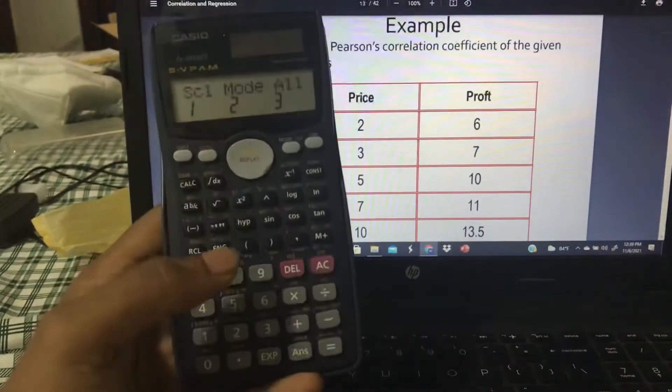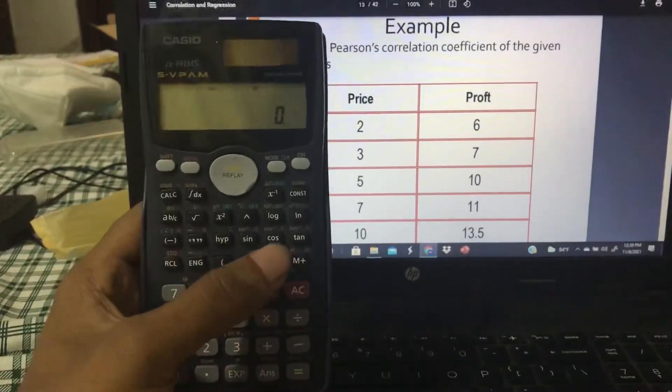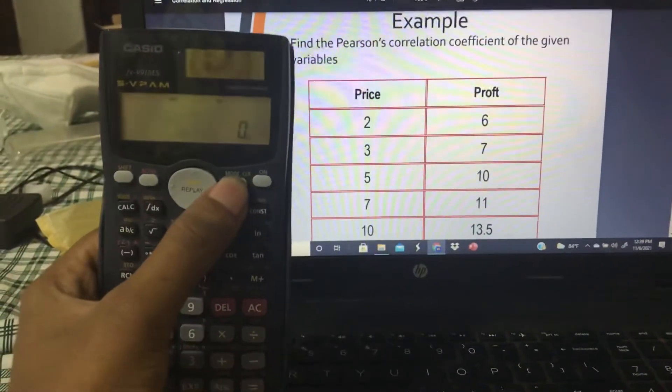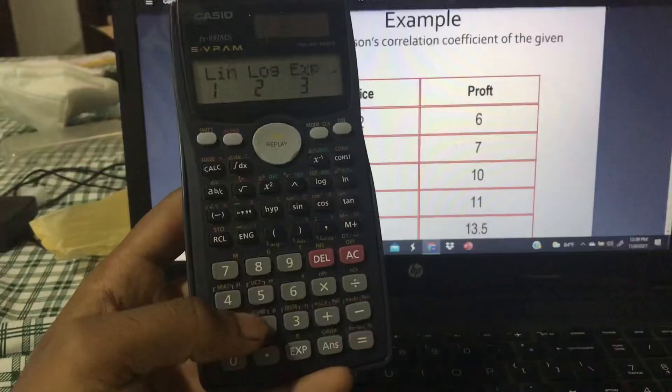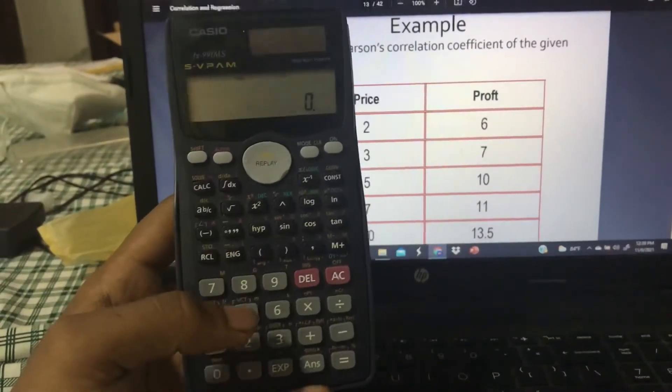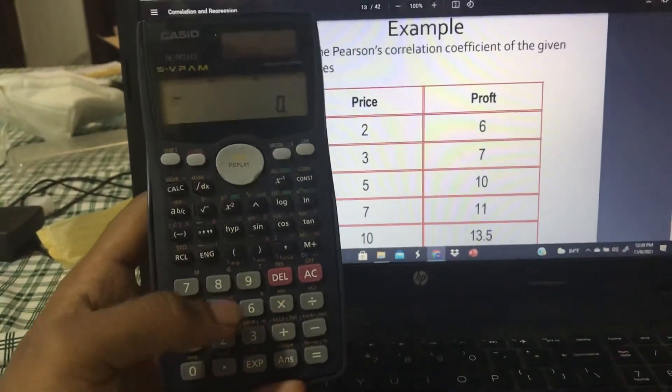So first of all, you have to press Shift, Mode, and 3 to delete all the data. After that, you have to press the Mode button twice, press number 2 for regression mode, press number 1 for linear mode. Then you have to enter all the data.